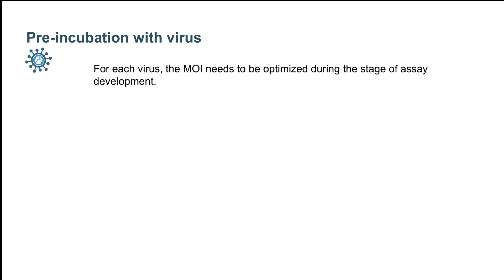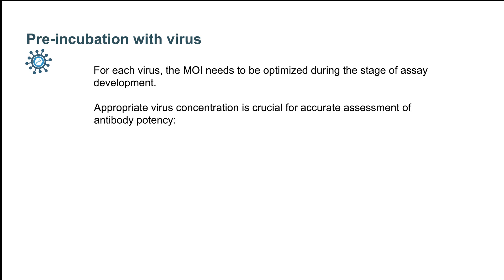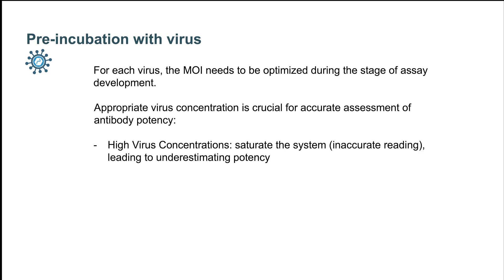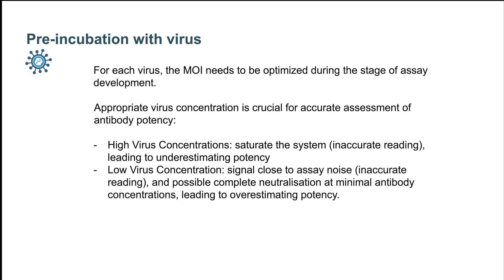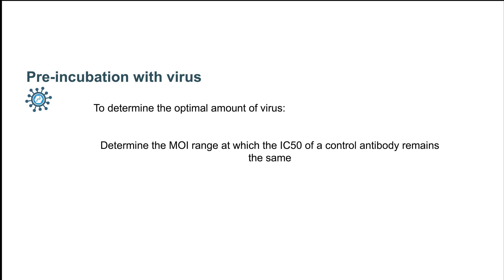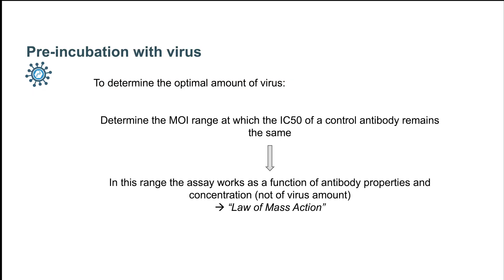For each virus, the MOI must be optimized during the stage of assay development, as the amount of virus is critical for accurate assessment of antibody potency. Too much virus can saturate the system, compromising readability and potentially underestimating antibody potency. Too little virus and signal may be too close to the assay noise, leading to inaccurate reading or, potentially, overestimation of potency. To identify the sweet spot, different concentrations of virus within the assay linear range should be tested. The range of MOIs at which the IC50 values obtained for the same control remain unchanged constitute the sweet spot.